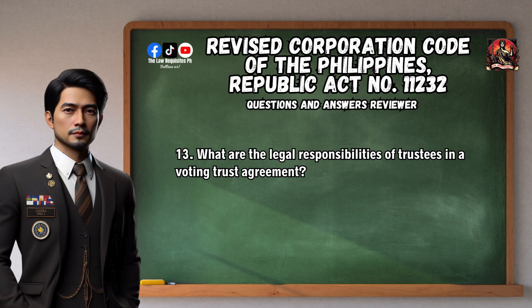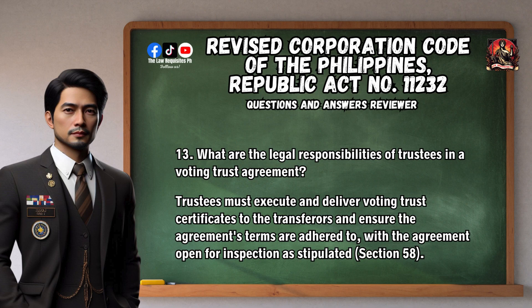Question 13: What are the legal responsibilities of trustees in a voting trust agreement? Trustees must execute and deliver voting trust certificates to the transferors and ensure the agreement's terms are adhered to, with the agreement open for inspection as stipulated. Section 58.